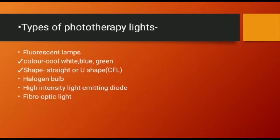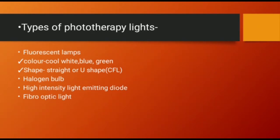There are different types of lights used in phototherapy: fluorescent lamp, halogen bulb, high-intensity light-emitting diode (LED), fiber optic light, etc. Fluorescent lamps come in different colors such as cool white, blue, and green, and in straight or U-shape. The U-shape is also called CFL — compact fluorescent lamp.